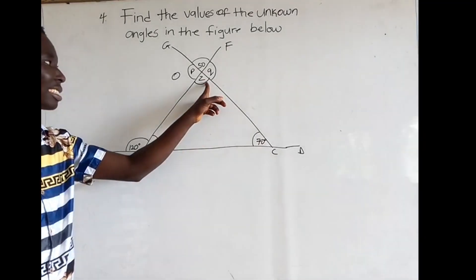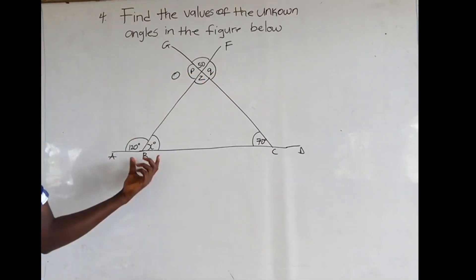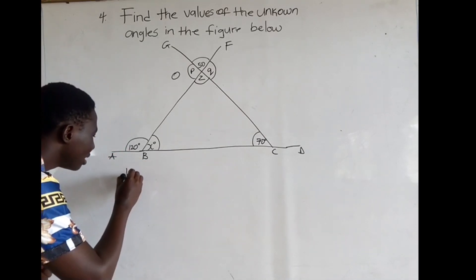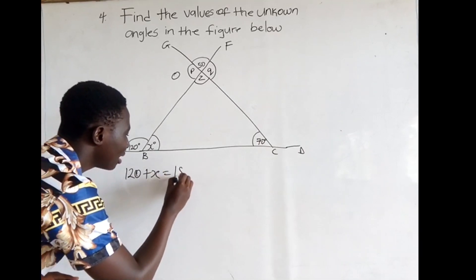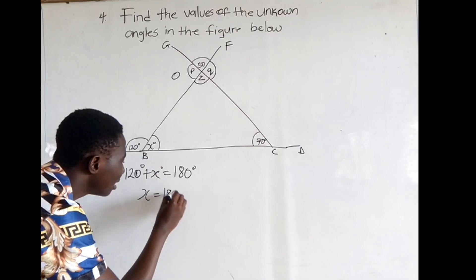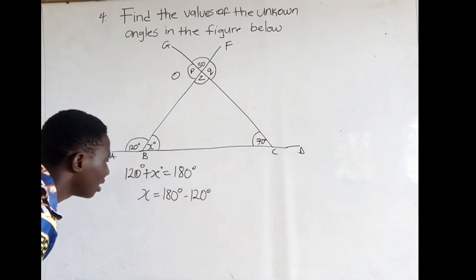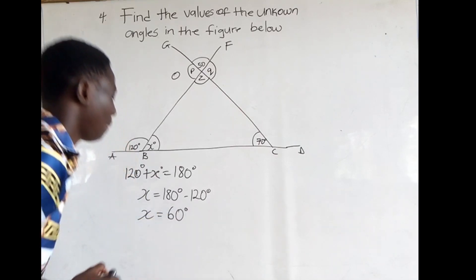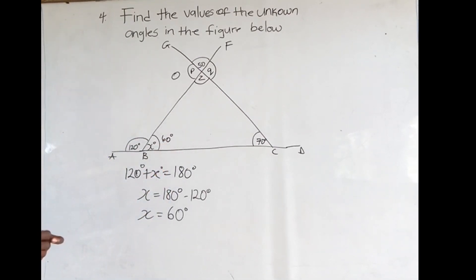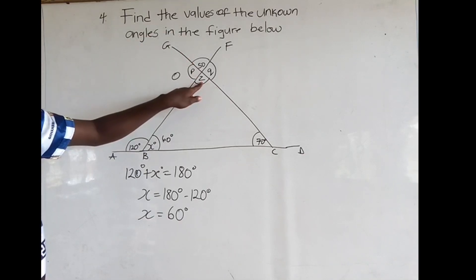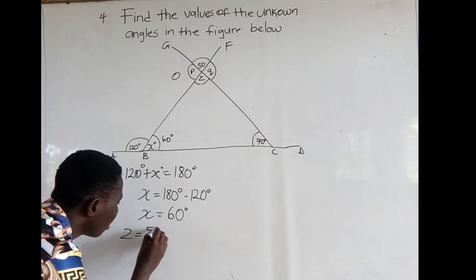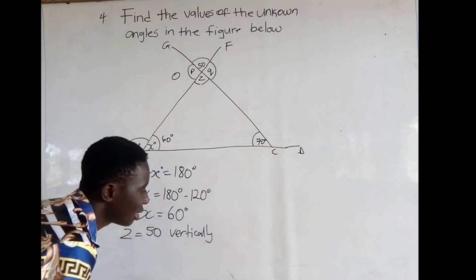Find the values of the unknown angles in the figure below. We have to find x, z, q, and p. Starting with x: angles on an adjacent straight line sum up to 180, so 120 plus x is equal to 180 degrees. Making x the subject: x is equal to 180 minus 120, so x is equal to 60 degrees. Now looking at z: 50 is vertically opposite to z, so z is equal to 50 degrees because vertically opposite angles are equal.